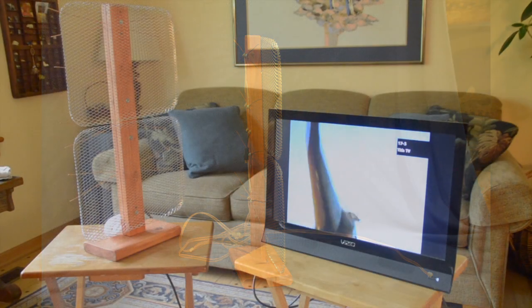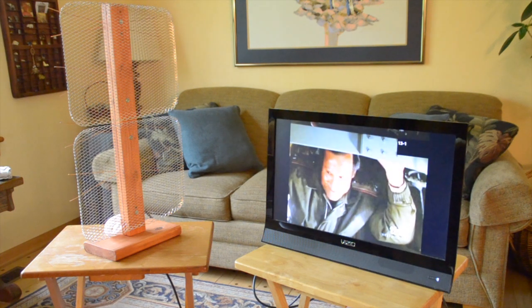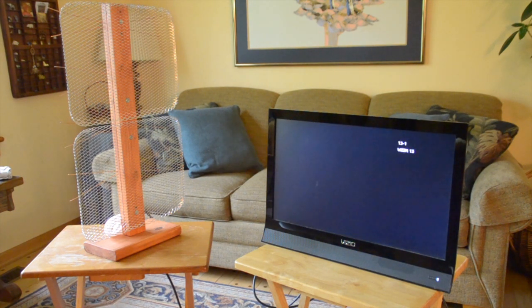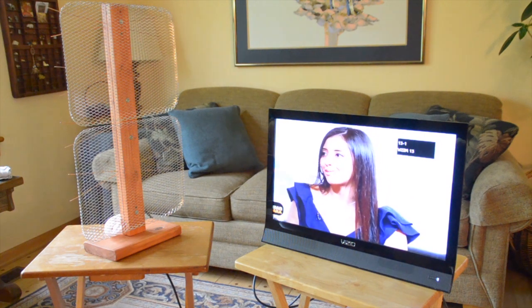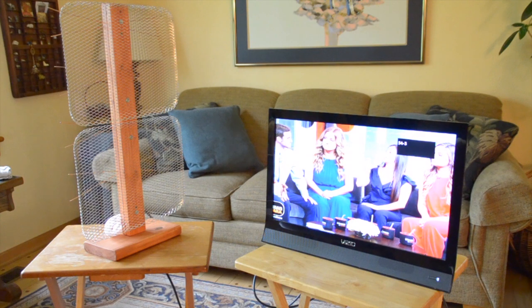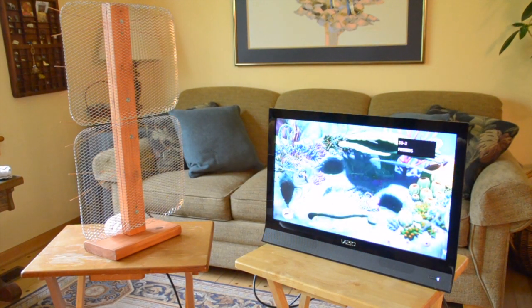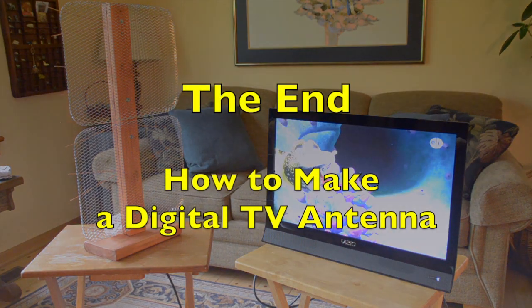So here is our antenna hooked up to the TV. We are receiving 19 channels. Normally I have the FM dipole antenna unwound and extended, but it seems to be working just fine where it is today. Getting your antenna to work isn't quite as easy as just hooking it up. In another video I show you how to connect your antenna and how to configure your TV to receive antenna signals.